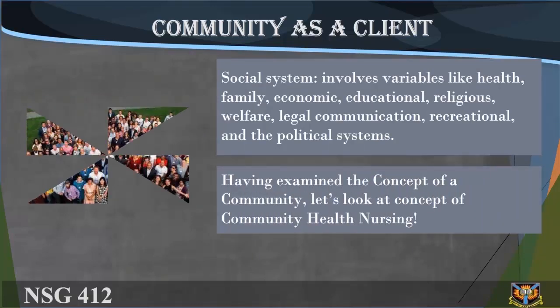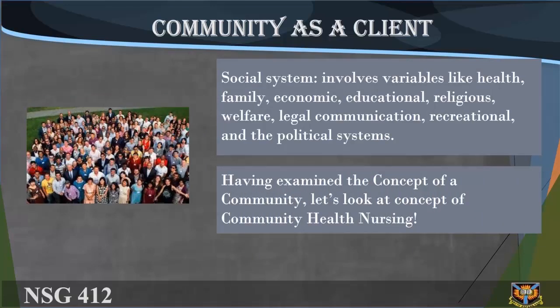Social system: it involves variables like health, family, economic, educational, religious, welfare, legal communication, recreational, and the political systems.